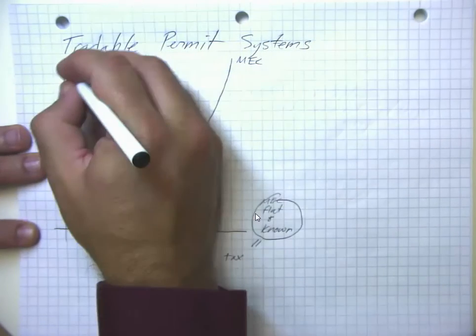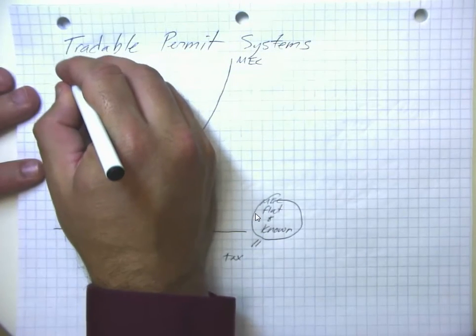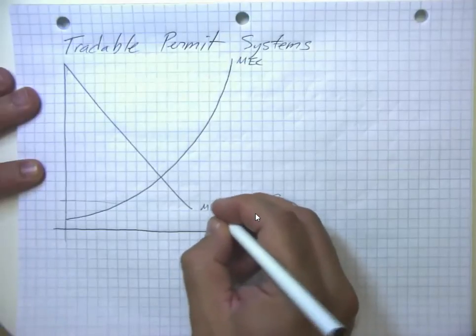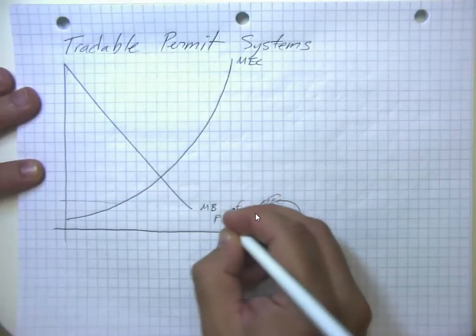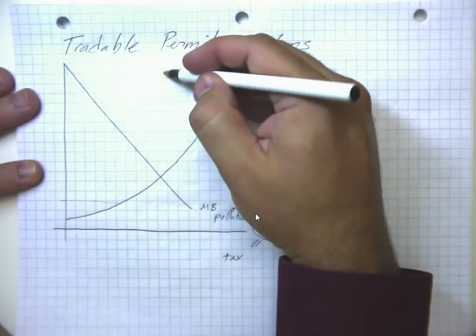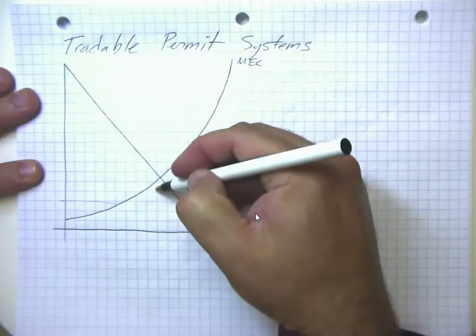So in this case, and let's suppose we have the marginal benefit of pollution here. So we might know that, say for instance, we need to keep carbon dioxide emissions below a certain amount here.